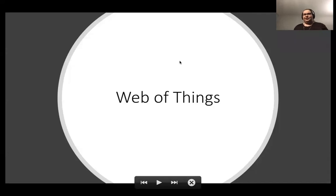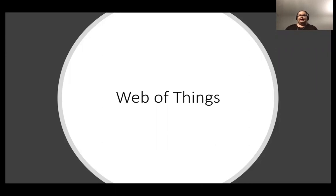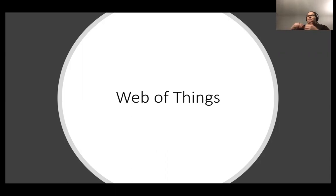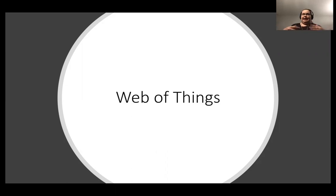Welcome to the next lecture of the Internet of Things course. In this lecture we discuss the web of things, which — I need to underline — is not the same thing as Internet of Things. By definition, Internet of Things is all of these systems where we have multiple devices participating together as a network through communication protocols, where they can sense the environment and perform analytics and interact with the environment using different actuators.